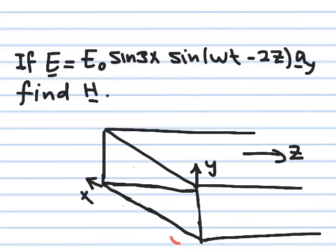In this second part of the video we solve one more example. Here the expression of the electric field is a function of x, t, and z, and it's in the y direction. This is another type of electric field seen in electromagnetic applications — specifically in waveguides. Waveguides are hollow metallic tubes with a rectangular cross-section used to guide electromagnetic energy in high-power applications like satellite and radar applications.